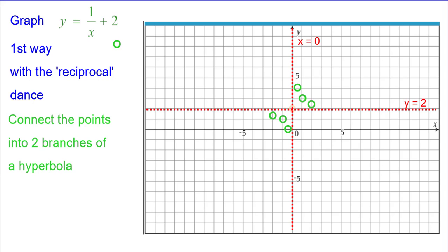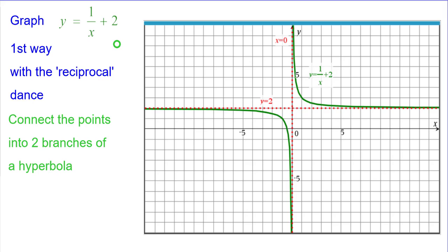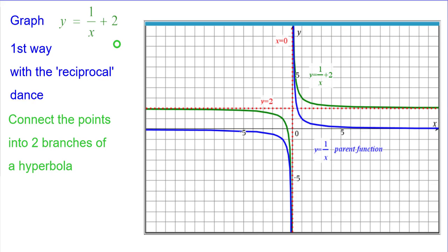So, we'll go ahead and connect those points with two branches of a hyperbola. And then, I'd like to compare that to the parent function. And notice that from the blue graph to the green graph, you go up two from that point and you also go up two from that point, in fact, any point.